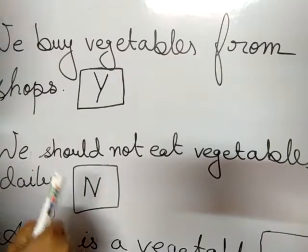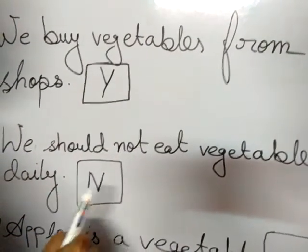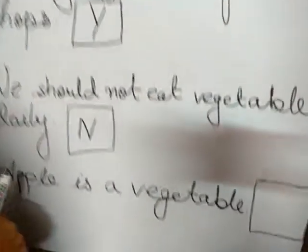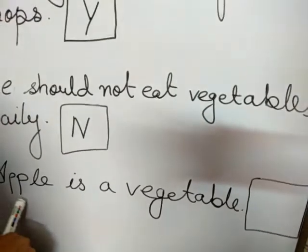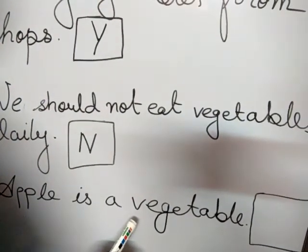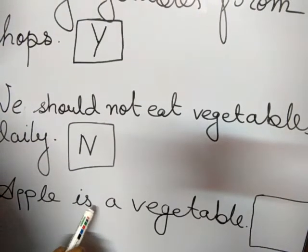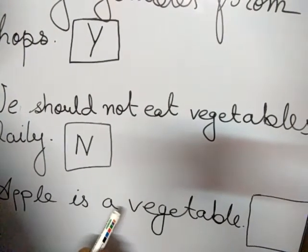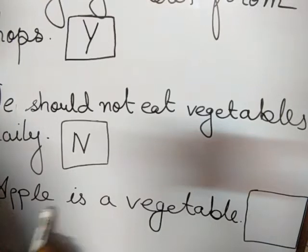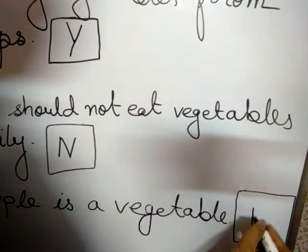Vegetables are very good for our health. Number five: Apple is a vegetable. No. You know apple is a fruit, so it is a wrong statement. Apple is a vegetable — no.